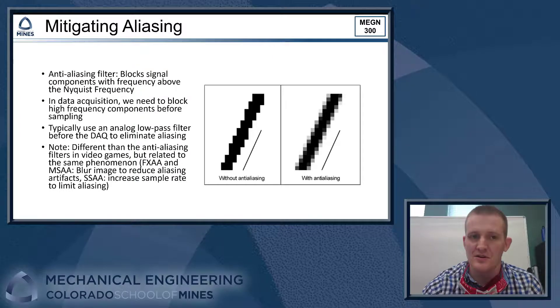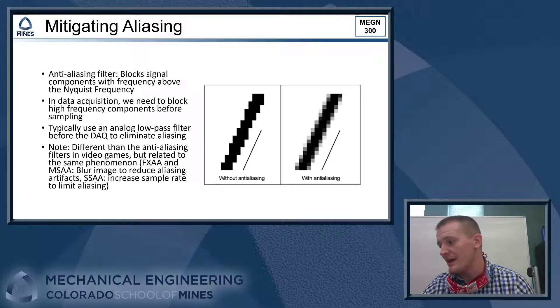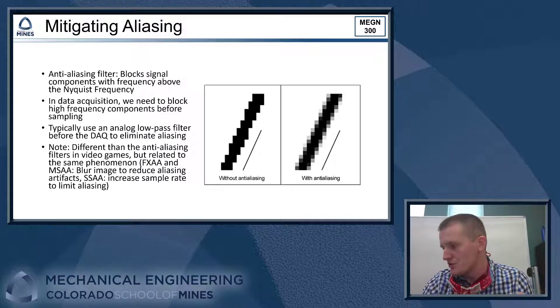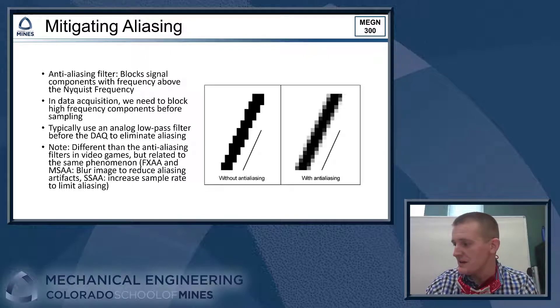All right, so how do we make sure that we don't get aliases in our signal? Because this could be a big problem if we have high frequency signal components appearing to be low frequency, and we can't figure out what the true frequency of our signal is. So what we'd like to do is just make sure that this is not going to happen to our data. So typically what we do is we implement what's called an anti-aliasing filter.